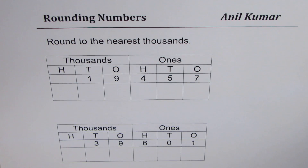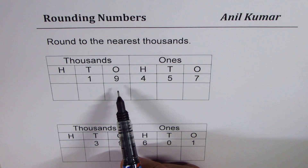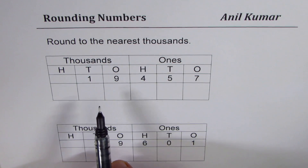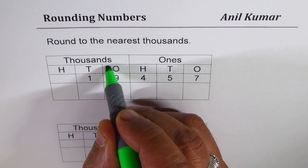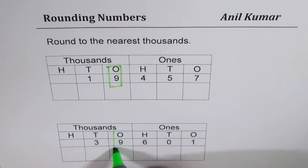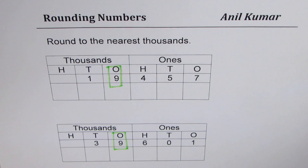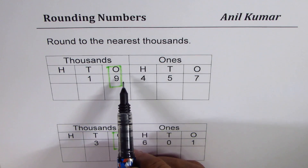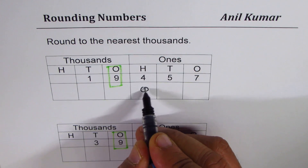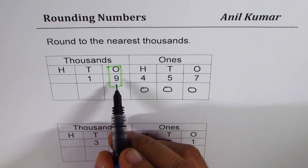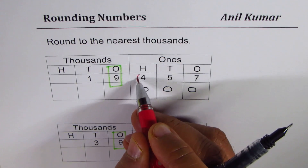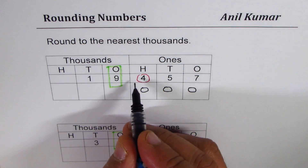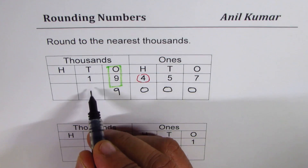Now we have a special case where we have nine in the thousands place. The first step is to identify the number in thousands place — here it is nine. When we round to nearest thousands, all place values to the right become zero. Nine will change only if the number to its right is five or more. Since we have four there — smaller than five — nine remains nine, and numbers to the left stay the same.